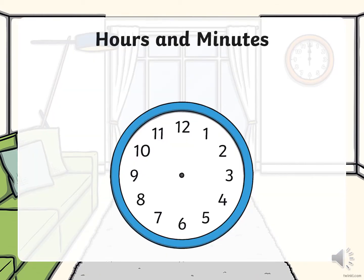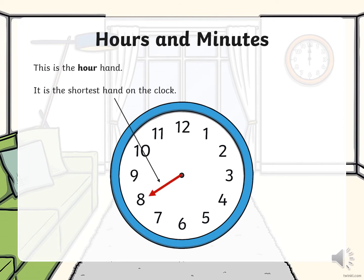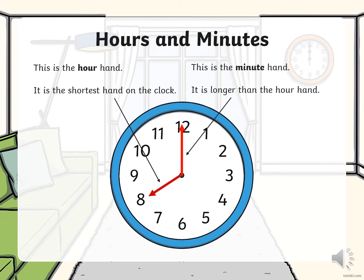We are going to look at hours and minutes. This is the hour hand — it is the shortest hand on the clock. And this is the minute hand — it is longer than the hour hand.